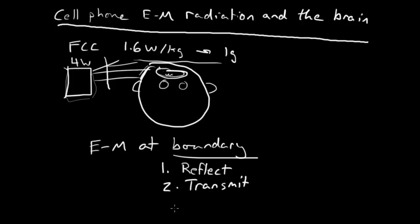And neither of these has to be 100%. You could have 90% reflection and 10% transmission, or you could have 10% reflection and 90% transmission, or something along those lines.